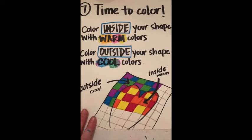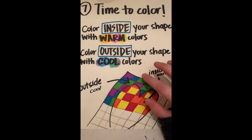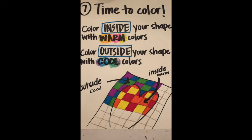Time to color. Color inside of your shape with warm colors. Color outside of your shape with cool colors. So I did a heart for my shape—inside my heart is warm, outside my heart is cool.